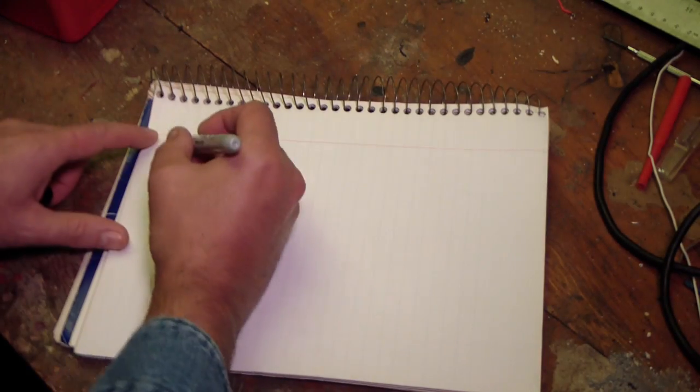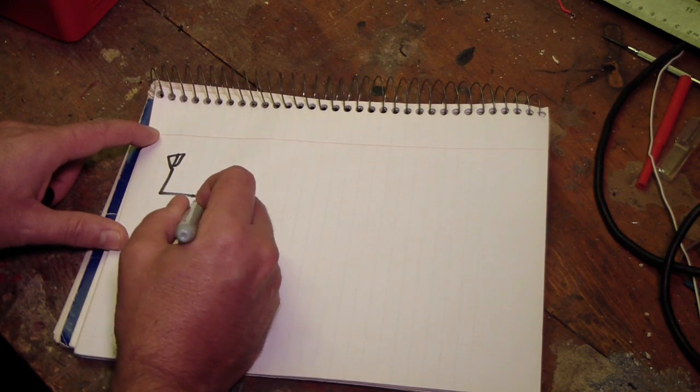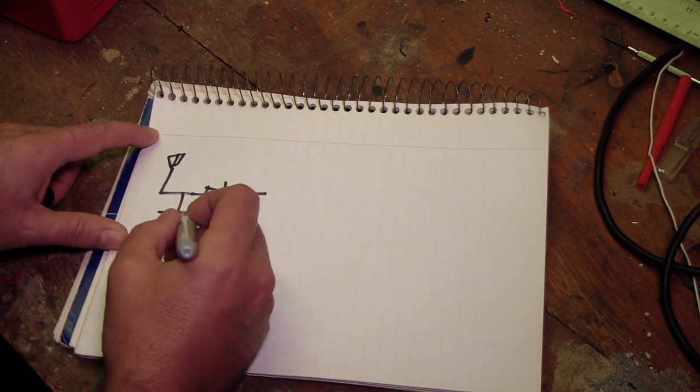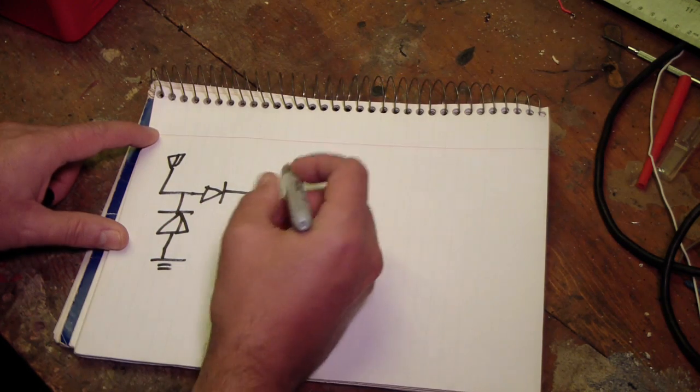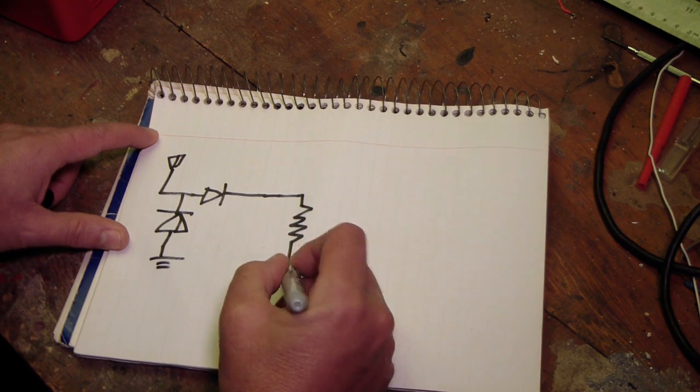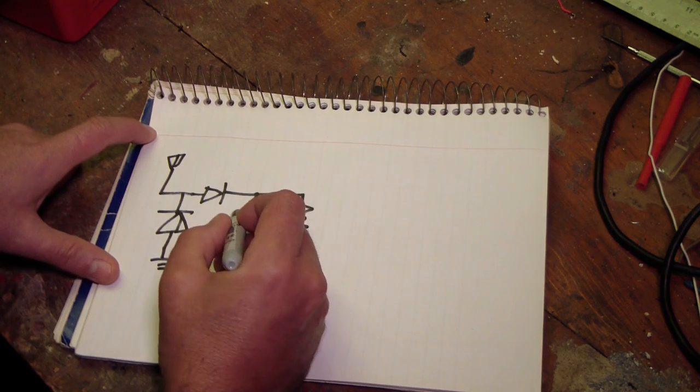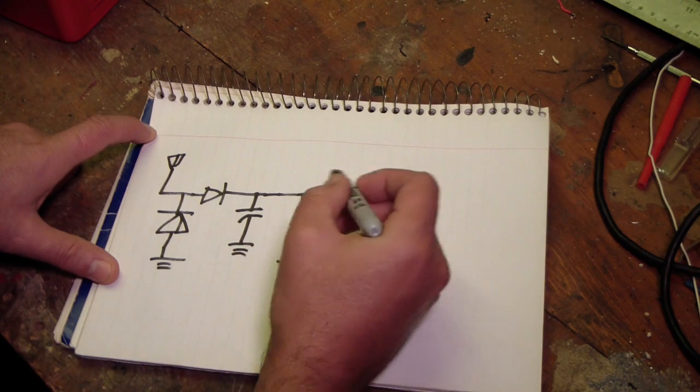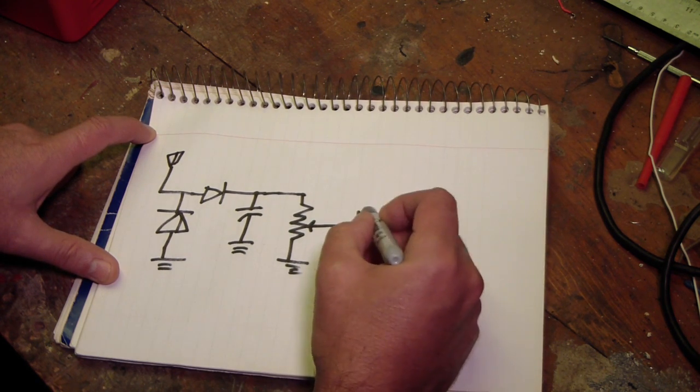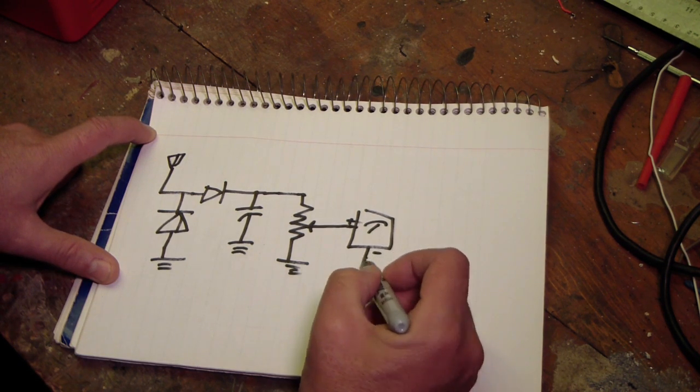Now, what is the schematic for a field strength meter? Well, you have an antenna that comes in and then you have a couple of diodes. And then this comes into a potentiometer. And then the tap off the potentiometer goes to your meter, and the ground of the meter goes to ground.